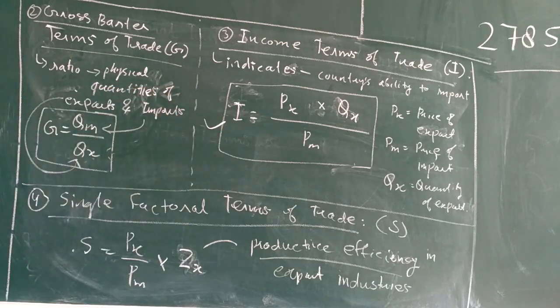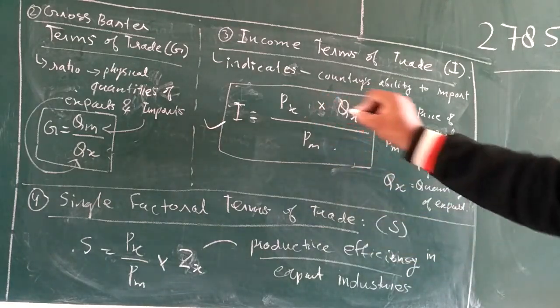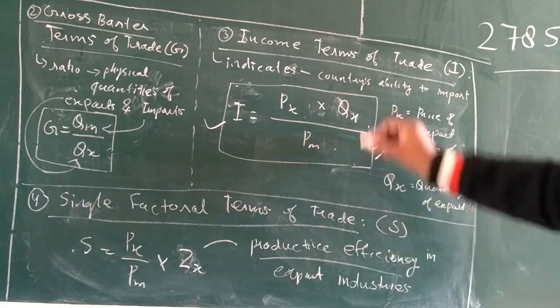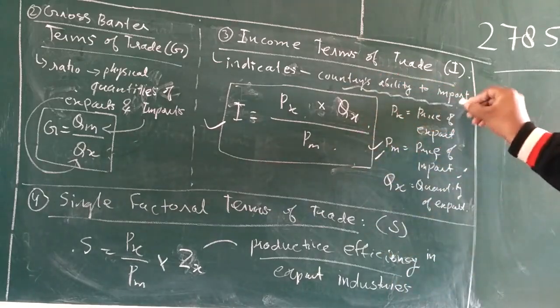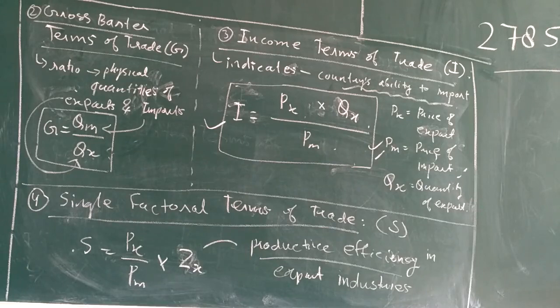Here Px is the price of exports, Qx is the quantity of exports, and Pm is the price of imports. This is very important as it indicates a country's ability to import - its capacity, its economic strength.